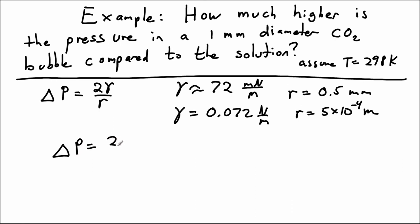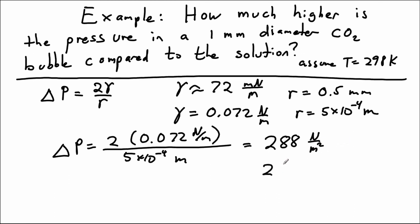So delta P is 2 times the surface tension divided by the radius. And that comes out to 288 newtons per meter squared, or really, we typically write that as just pascals.